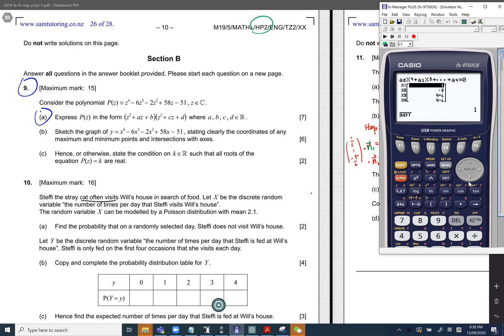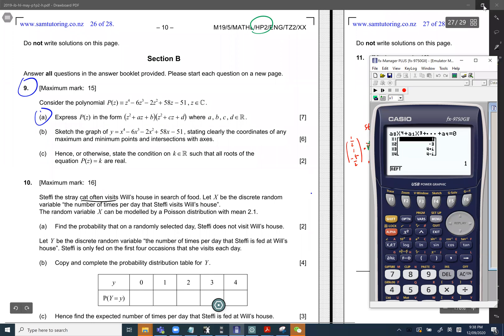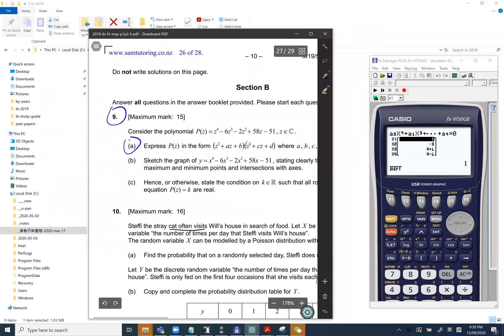We got all answers here from the calculator, which is 1, negative 3, 4 plus i, and 4 minus i.